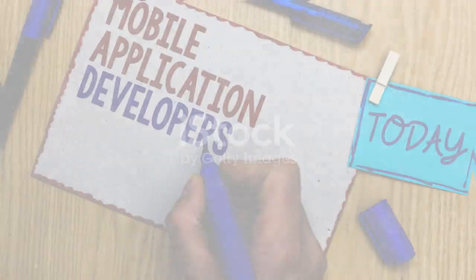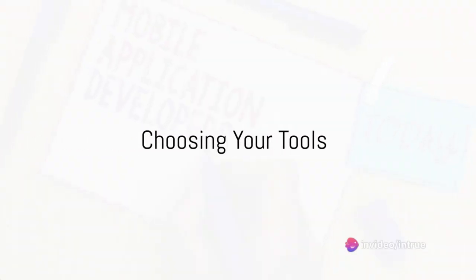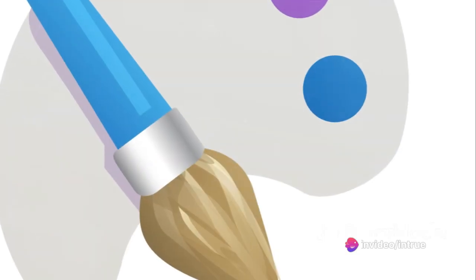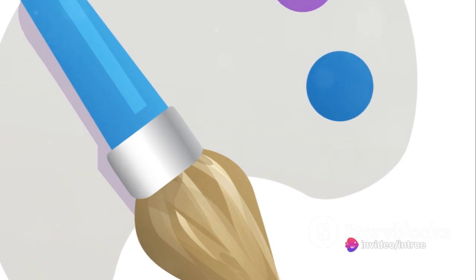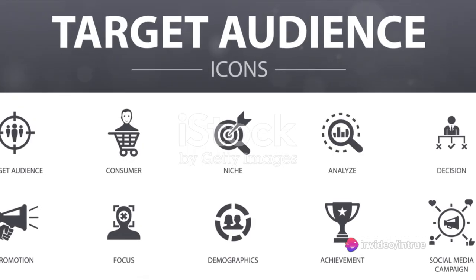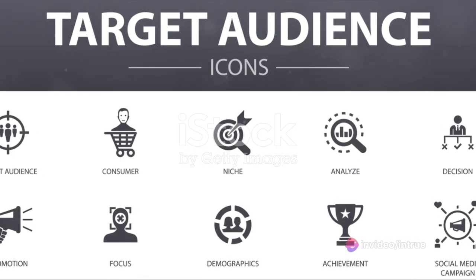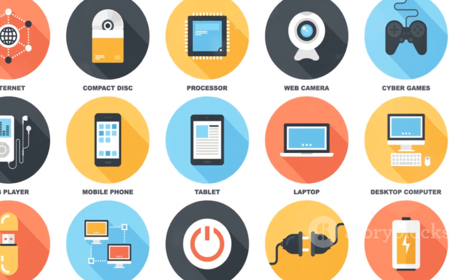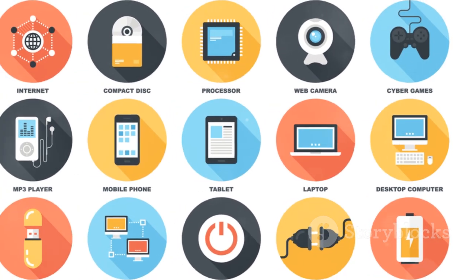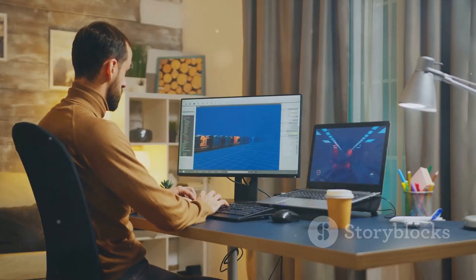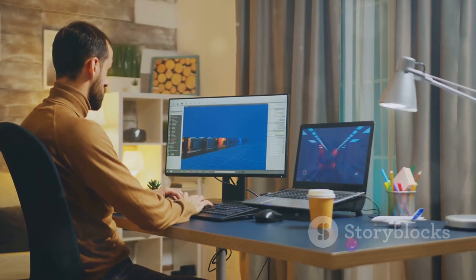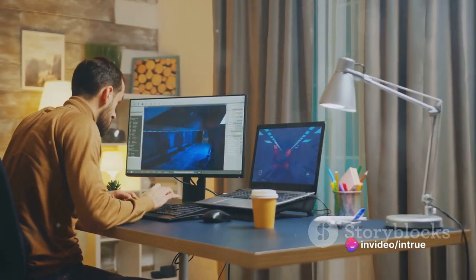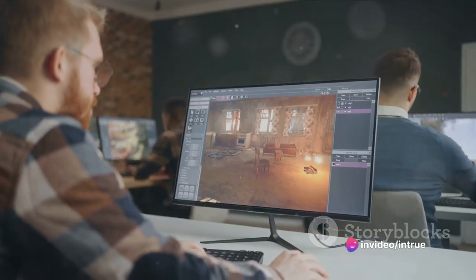Next, you'll need to choose your development tools. It's like picking the right paintbrush for your masterpiece. The development platform and programming language you select should match your app idea and target audience. For instance, if you're creating a game, you might opt for Unity, a platform known for its robust gaming features.